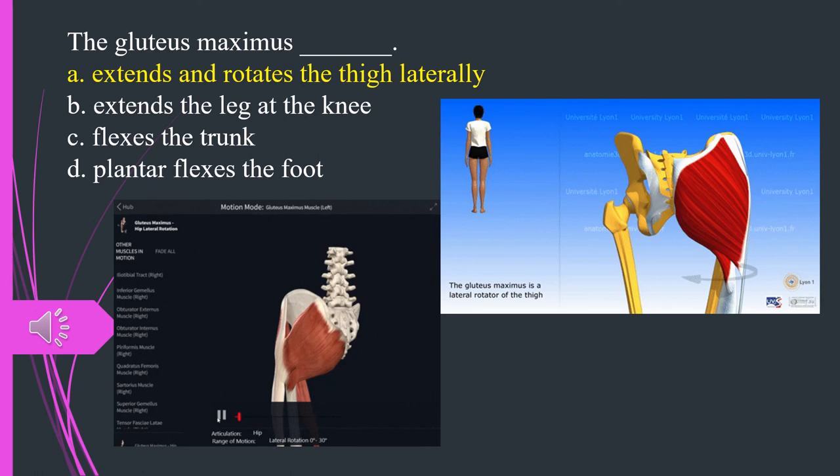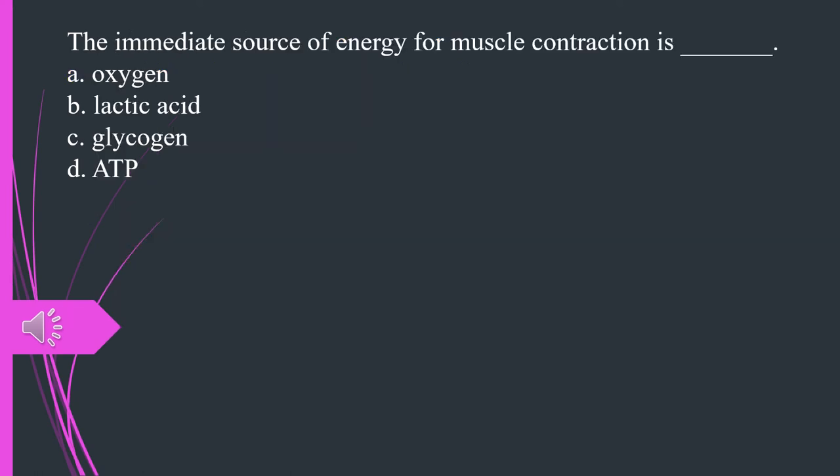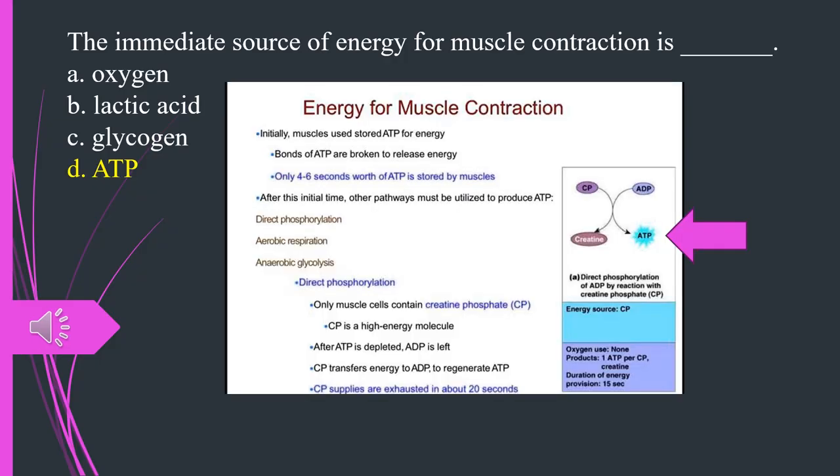The immediate source of energy for muscle contraction is A. Oxygen. B. Lactic acid. C. Glycogen. D. ATP. The answer is D. ATP.